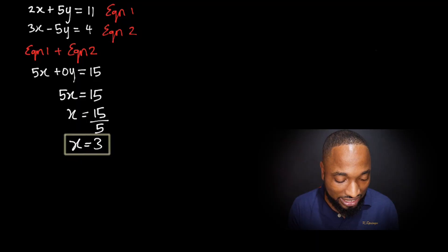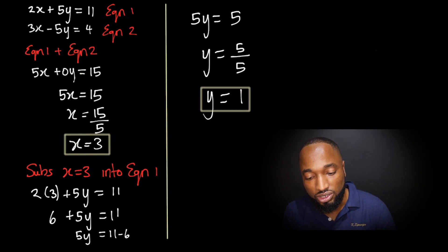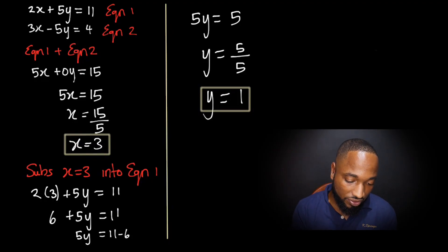You're substituting this x equals 3 into equation 1—this is the next step. You eliminate, you get a variable (x or y, sometimes you'll get y instead of x), and then substitute the answer you got into any one of these first equations. I'm substituting it into equation 1, so let's substitute and see what value of y we're gonna pull out.